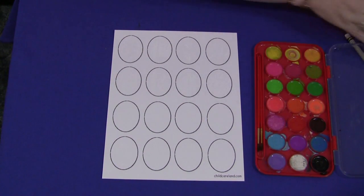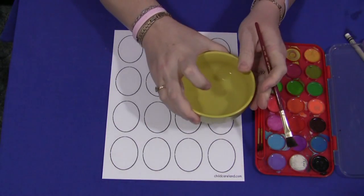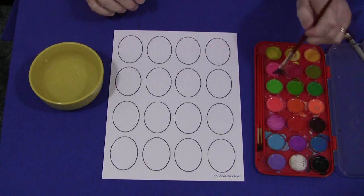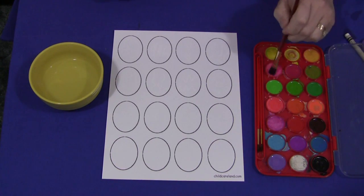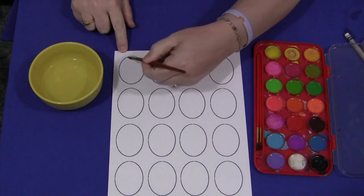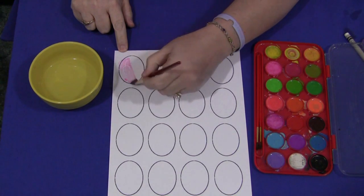So again, I usually have a plastic cup or some kind of bowl filled with water when we watercolor that the children dip their brushes into. And then they would do that with a color here and they would just paint over the eggs.